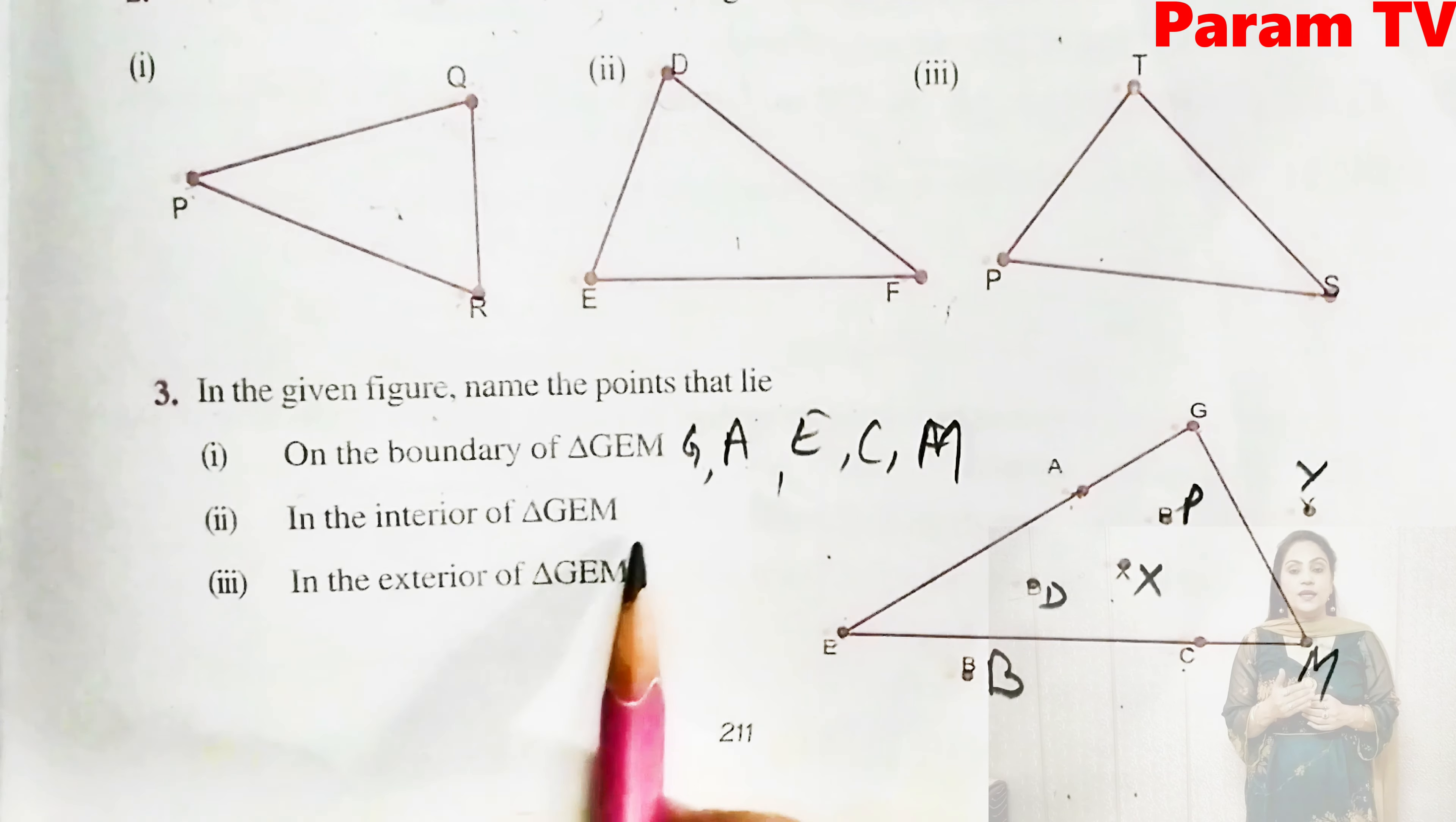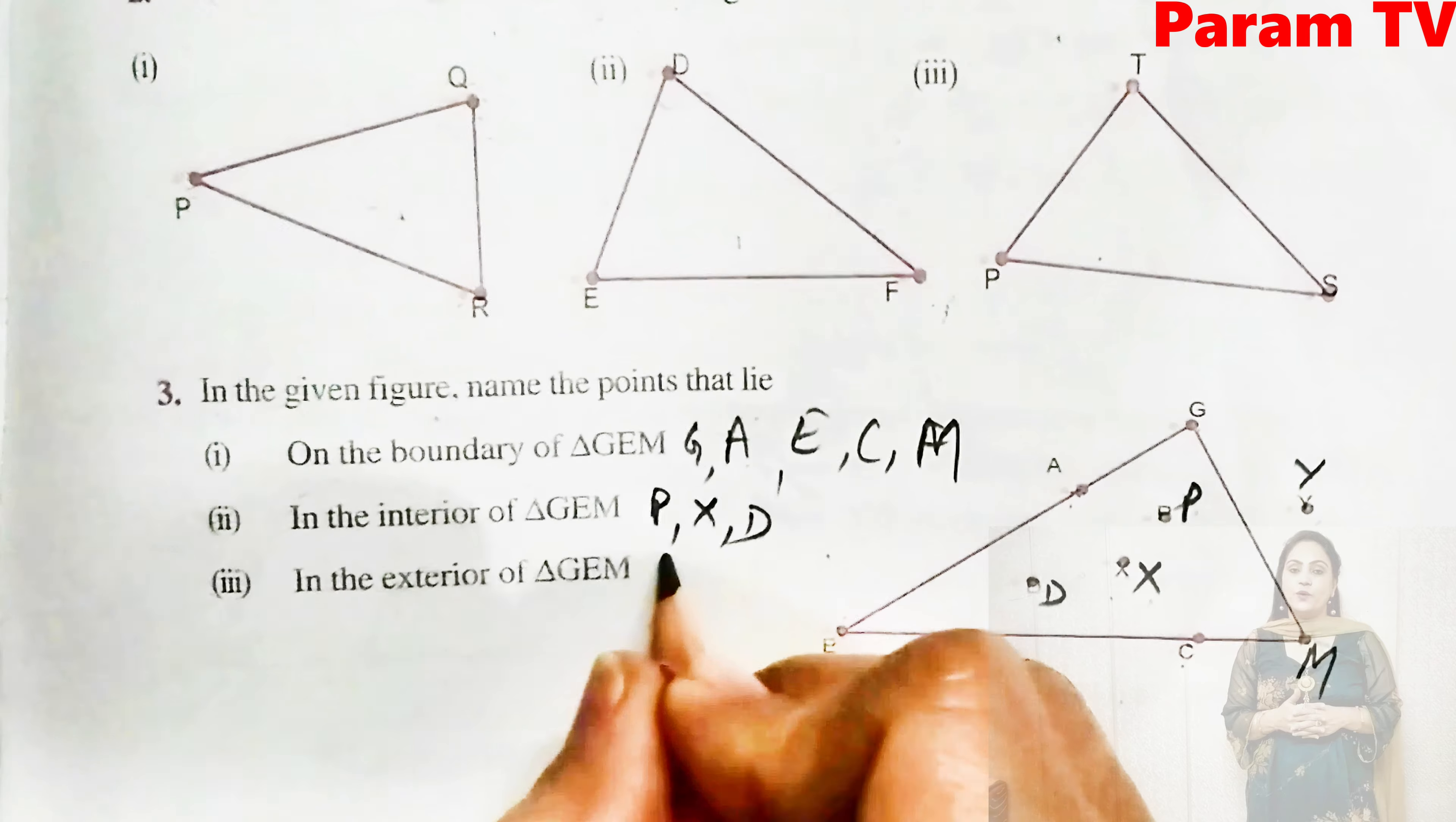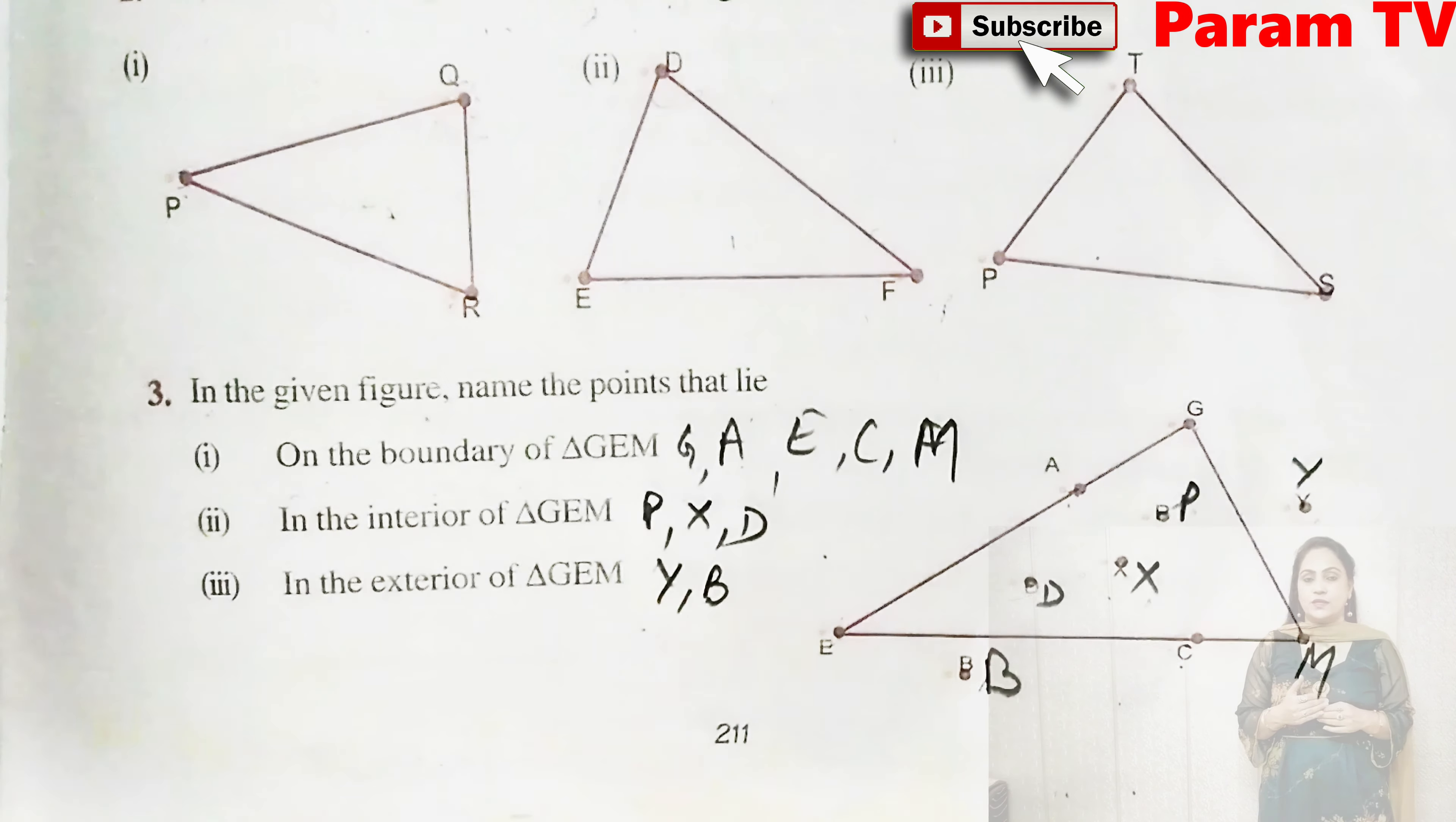So in the interior of GEM, see the interior. P is there, X is there, D is there. So this is P, X, D. And in the exterior, see outside. What is there? Y and B. This is Y and this is B. And those who lie on the boundary, they are on the boundary.